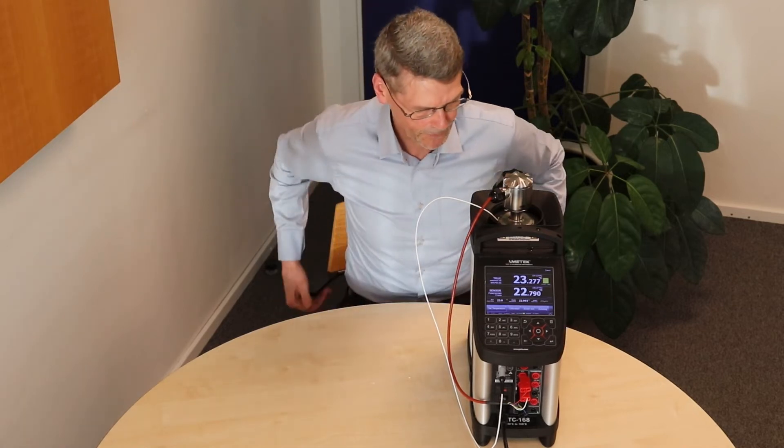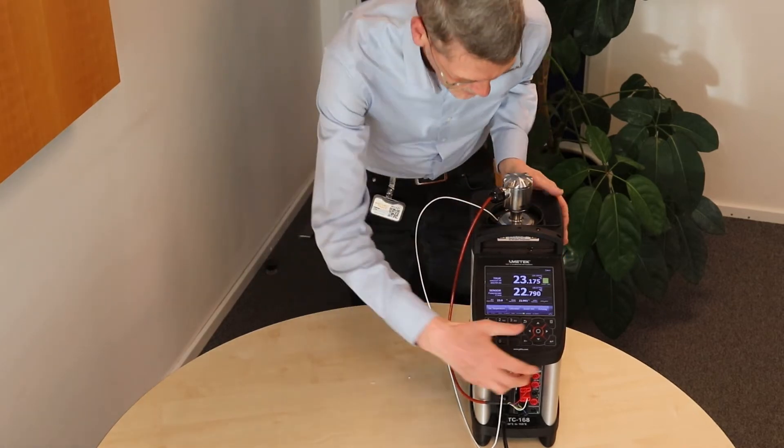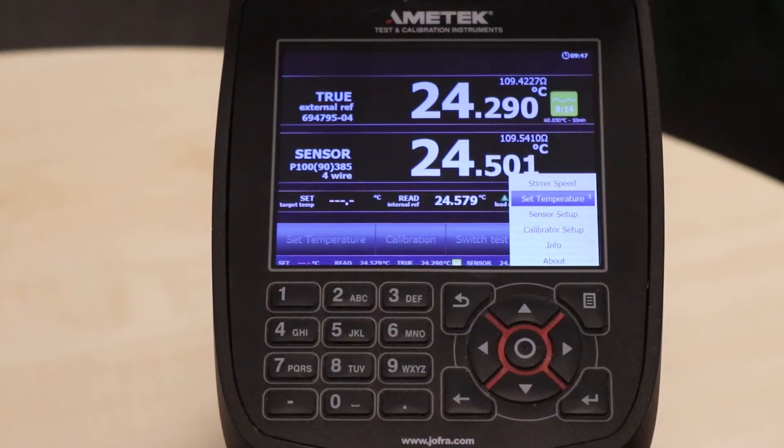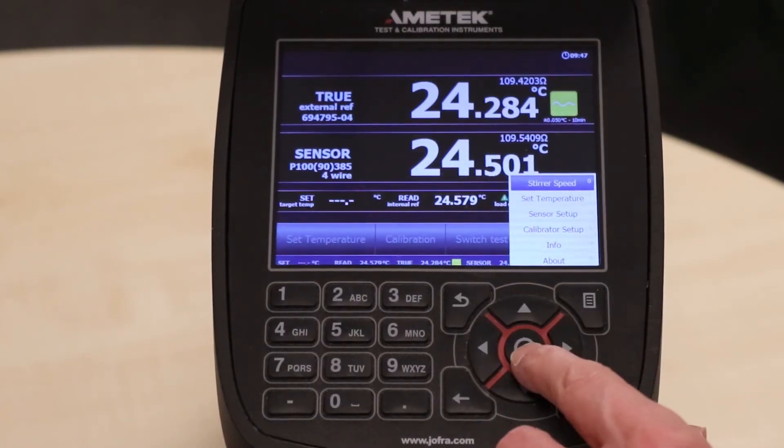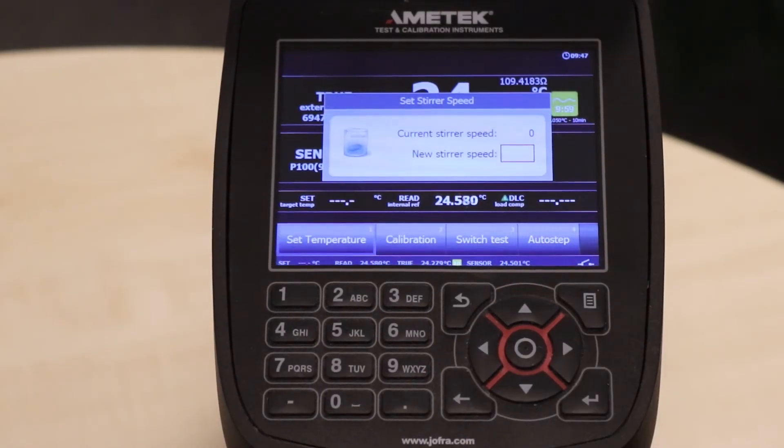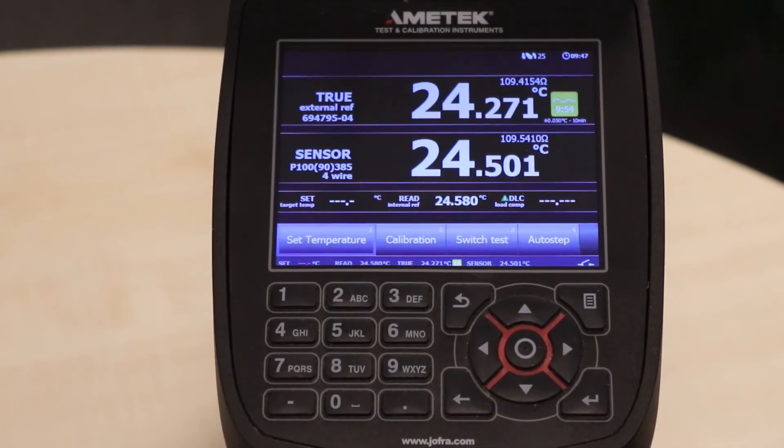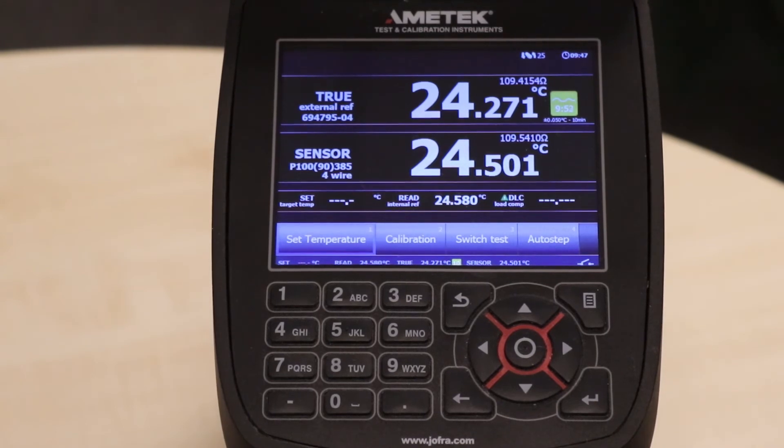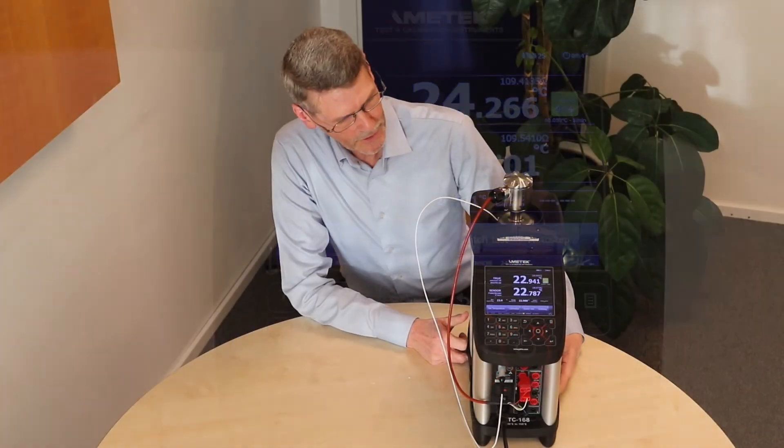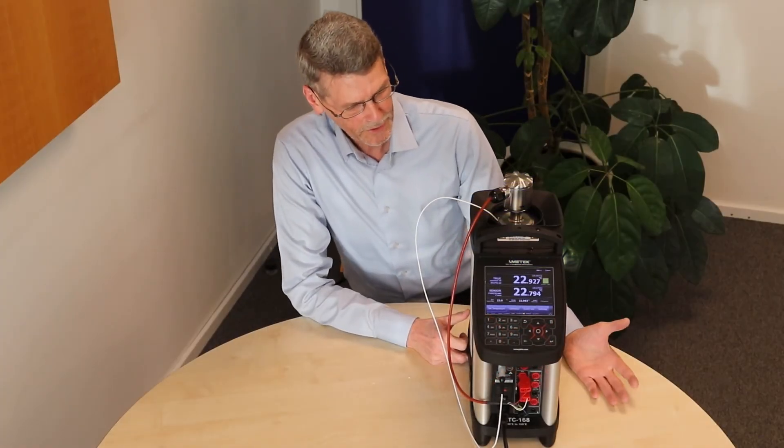Now we need to set the steerer speed. We go into the menu, go into the steerer setup, and we set it to 25. You can now hear that the steerer is running. The setup is ready, and we can now set a temperature.